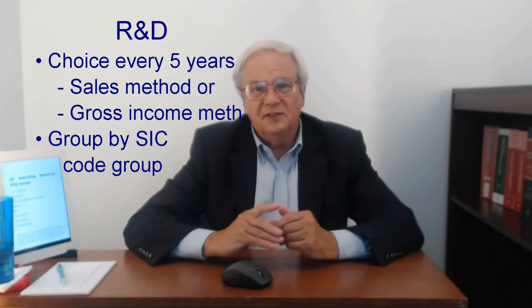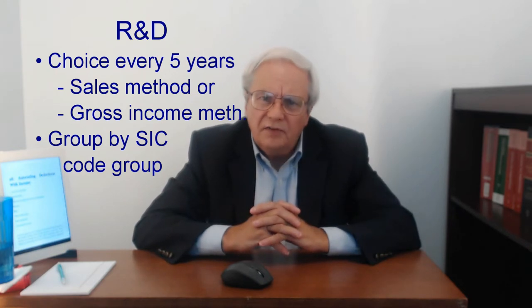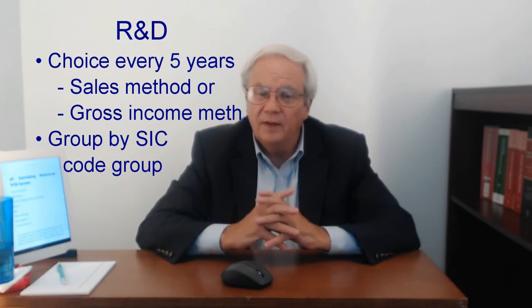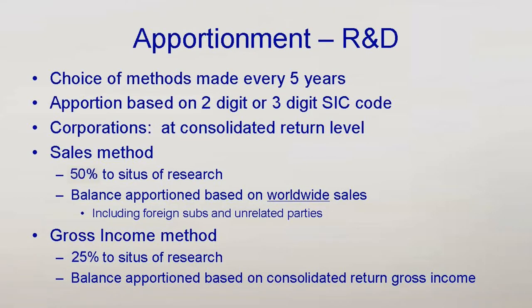Research and experimentation expenses must also be apportioned. The taxpayer has a few choices to make. The costs of deductible R&D are apportioned within all activities of the taxpayer or the consolidated return group for each two-digit or three-digit SIC code. The taxpayer chooses which, depending on what makes factual sense for the R&D activities conducted. Within each two- or three-digit group, R&D is apportioned using either the sales method or the gross income method. A taxpayer may choose which method once every five years, then is locked into that method for the rest of the five years.